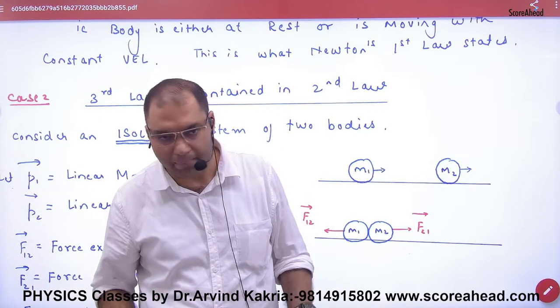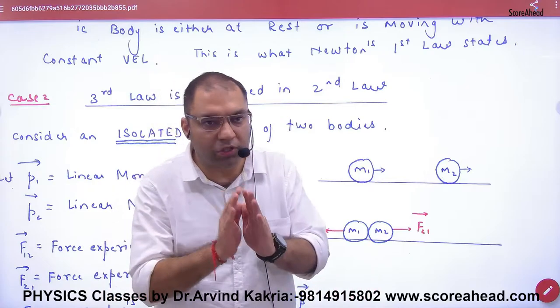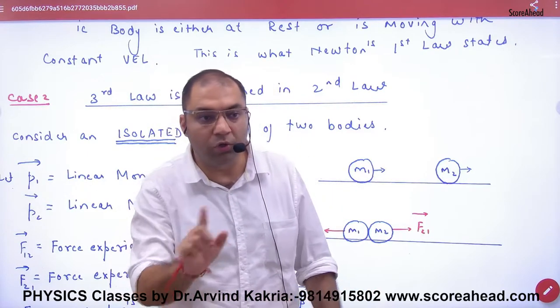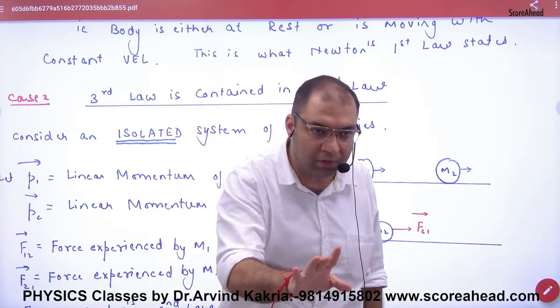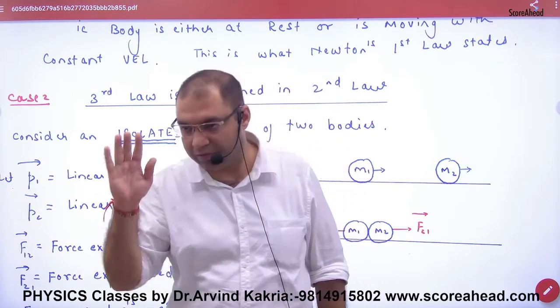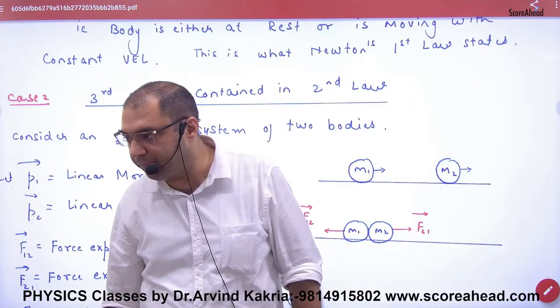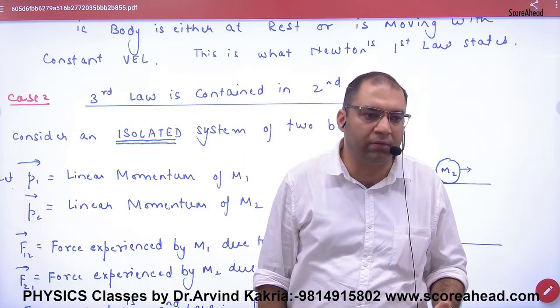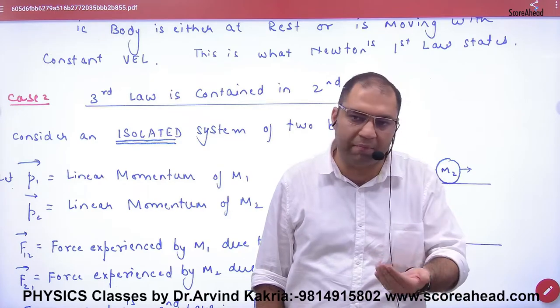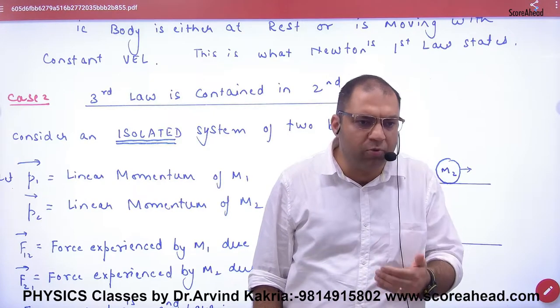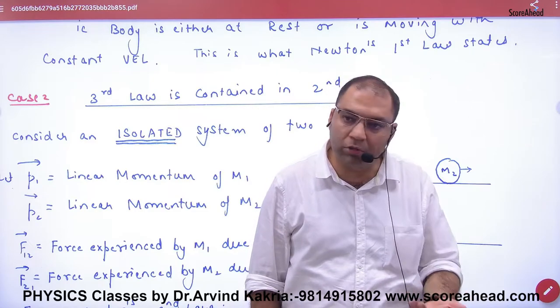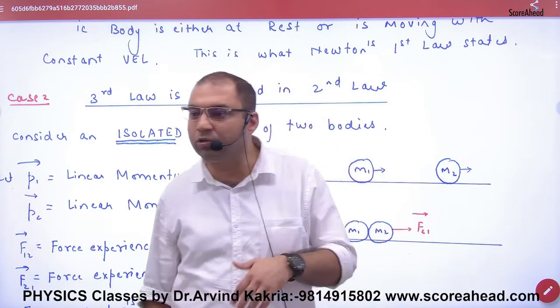So bullet goes forward, gun goes back. Action-reaction, equal and opposite. Good. When I fired the bullet and gun naturally came back, no external force is acting on this system. This is an isolated system, clear? Now the next question is, how do I know if the system is isolated or not?